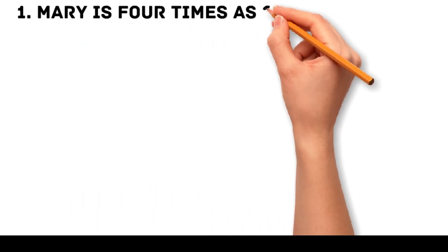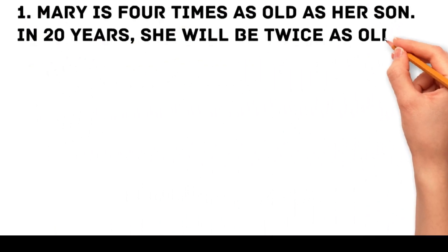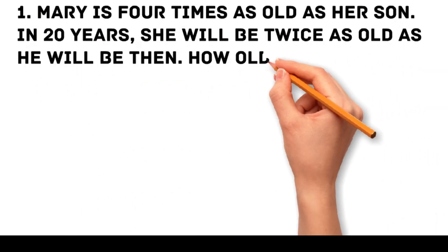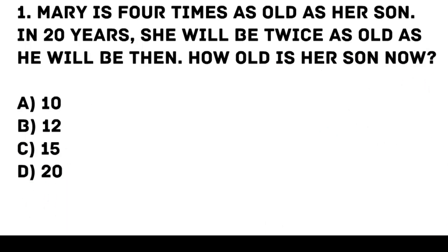Problem 1. Mary is 4 times as old as her son. In 20 years, she will be twice as old as he will be then. How old is her son now? a. 10, b. 12, c. 15, d. 20.